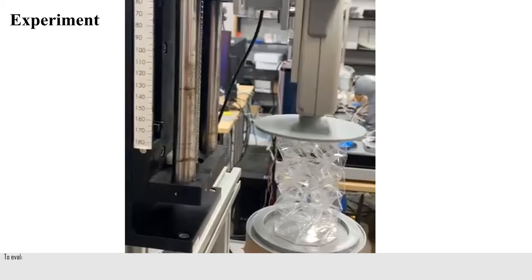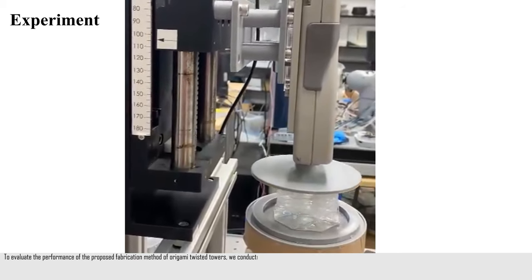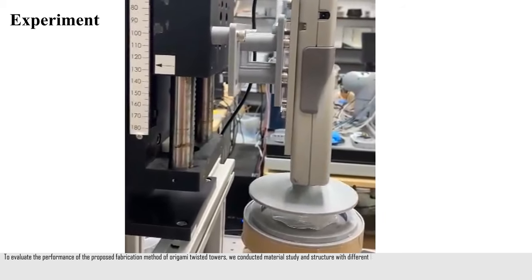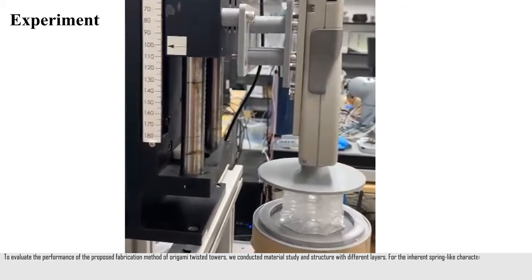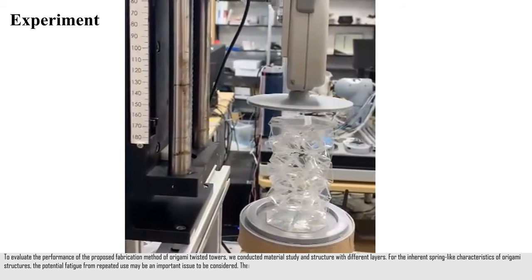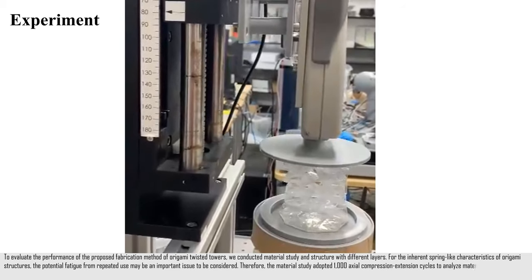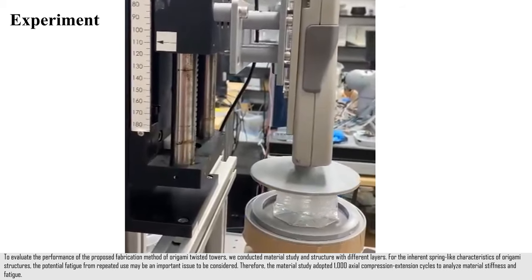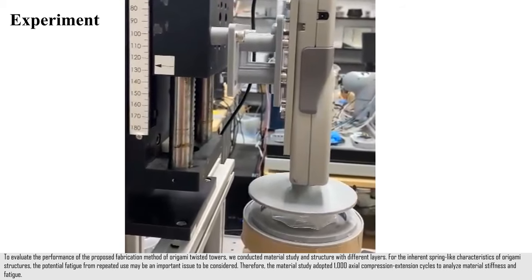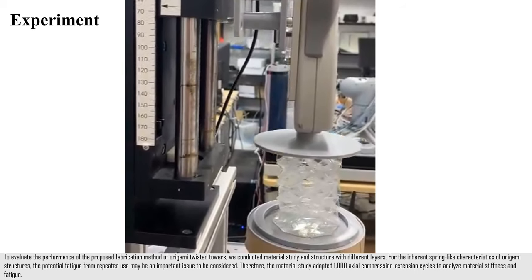To evaluate the performance of the proposed fabrication method of origami twisted towers, we conducted material study and structure with different layers. For the inherent spring-like characteristics of origami structures, the potential fatigue from repeated use may be an important issue to be considered. Therefore, the material study adopted 1,000 axial compression extension cycles to analyze material stiffness and fatigue.